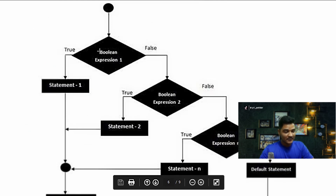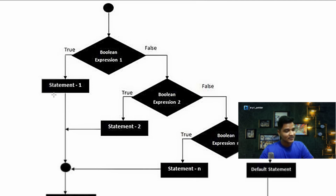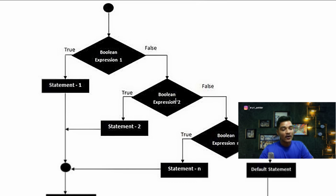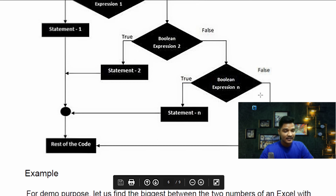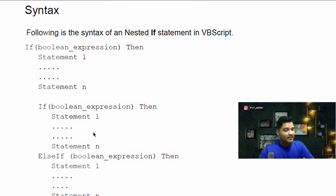The flow diagram for IF-ELSE-IF: boolean expression one — if true, statement one executes; if false, it checks the next condition. If the next condition is true, statement two executes; otherwise it checks the next condition. If that is true, its statement executes; otherwise it goes to the last statement in the flowchart and the rest of the code executes.